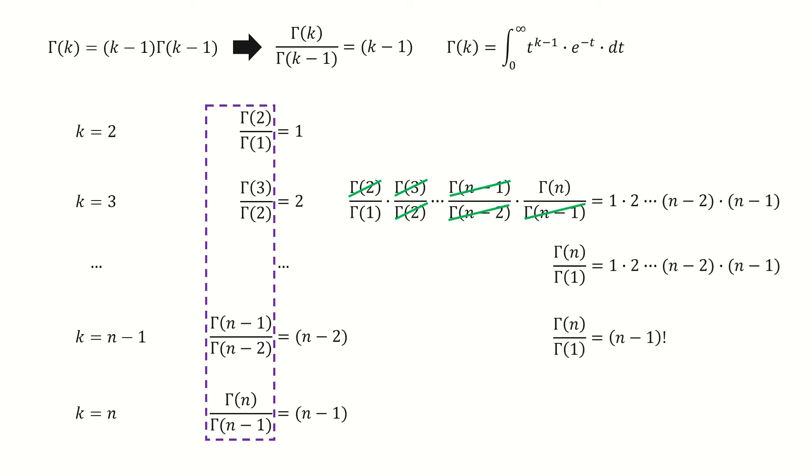For the right-hand side, it just equals n minus 1 factorial. Next, we need to determine the value for gamma 1.